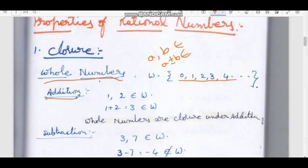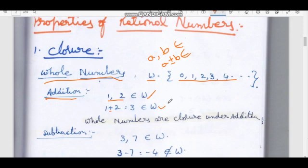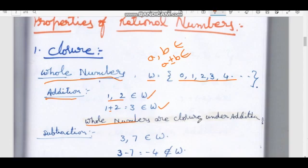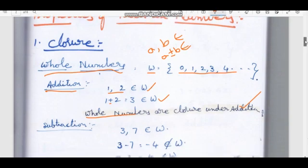Addition — the first property is addition, a binary operation. If 1 and 2 belong to W (whole numbers), then 1 plus 2 equals 3, which also belongs to W. Therefore, the whole numbers are closed under addition.